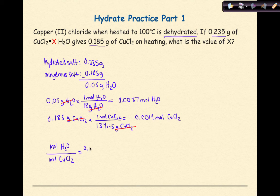I get 0.0027 divided by 0.0014, and I find that that number is 2. So this 2 right here represents the red X that we see in this formula right here.